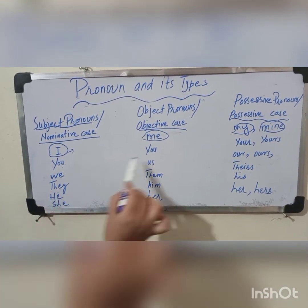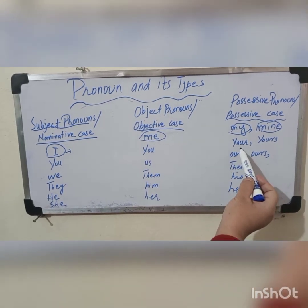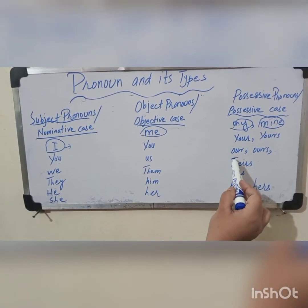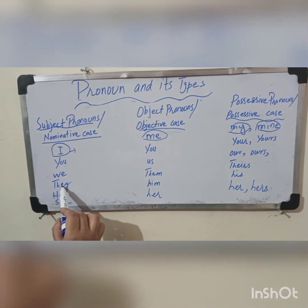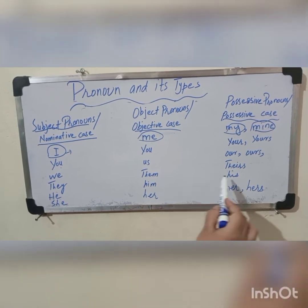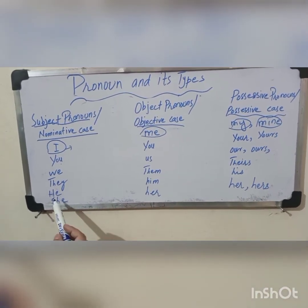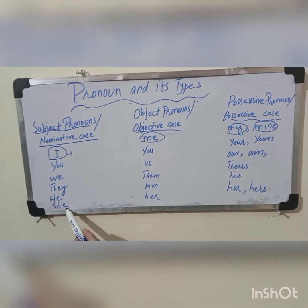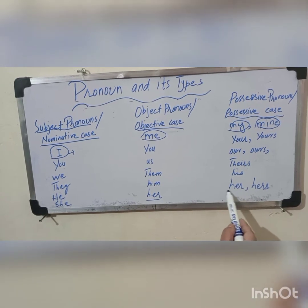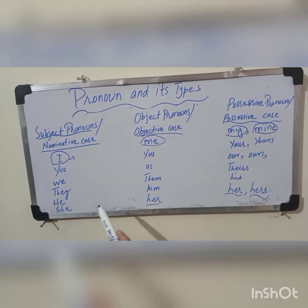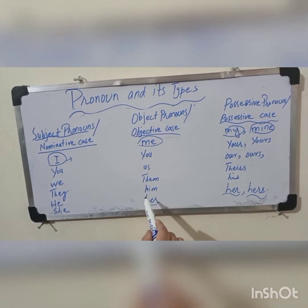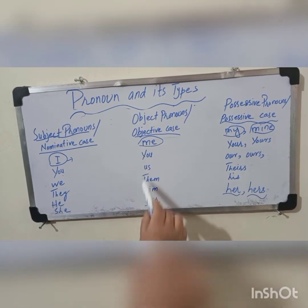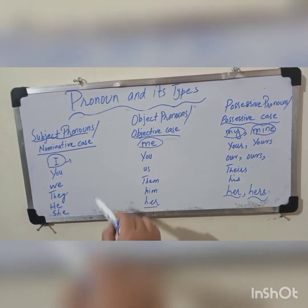You بطور subject pronoun بھی use ہوتا ہے اور object میں بھی، possessive میں your اور yours ہے۔ We کا object pronoun us ہے اور possessive our اور ours ہے۔ They کا objective pronoun them ہے اور possessive theirs ہے۔ He کا object pronoun him ہے اور possessive his ہے۔ She کا object pronoun her ہے اور possessive her یا hers ہے۔ It کا subject، object دونوں میں it ہے اور possessive its ہے۔